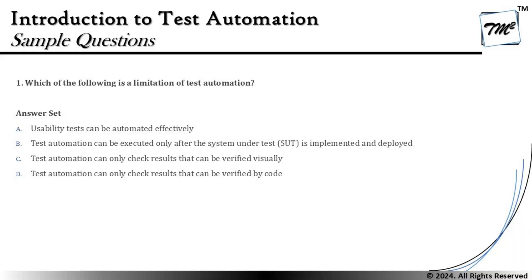Option A says: usability tests can be automated effectively. That is actually one of the advantages, not a limitation. Because of automation we can make usability testing much more efficient and effective. So this is not the right answer.